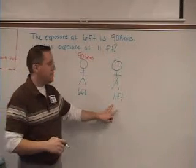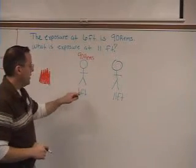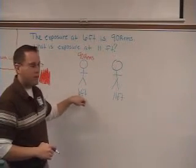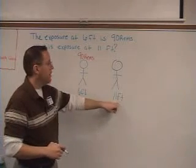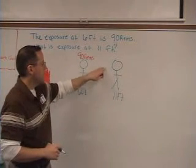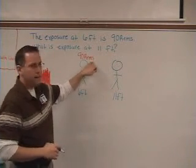So it's the same thing with exposure to radiation. If you're 6 feet from it, you're going to get more exposure than you would if you're 11 feet away. So we know our answer when we do this should be less than 90 rims.